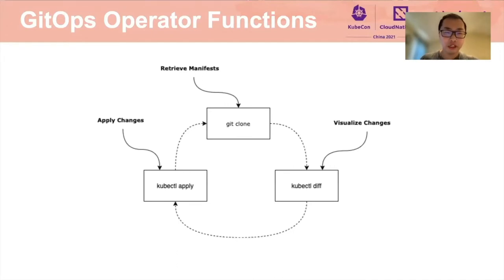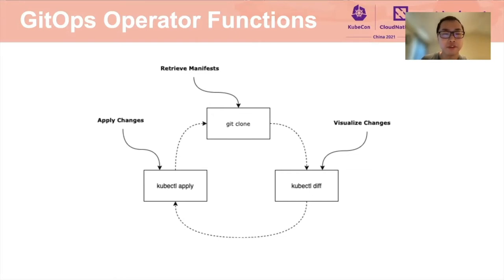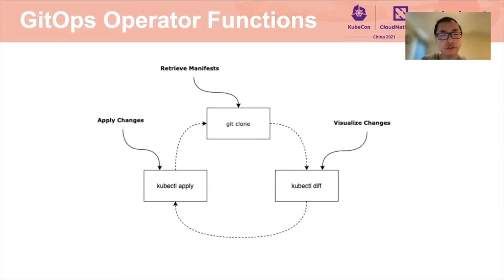Before we dive deep into the scalability challenges, let's talk about GitOps in general. GitOps is a set of practices to manage infrastructure and application configurations using Git. That means any GitOps operator needs to automate the following steps in sequence: first, retrieve manifests from Git by cloning the Git repository, such as from GitHub or GitLab; second, compare Git manifests with live resources in the Kubernetes cluster using Kube Control Diff; finally, use Kube Control Apply to push changes into the Kubernetes cluster. This is exactly what Argo CD is doing.